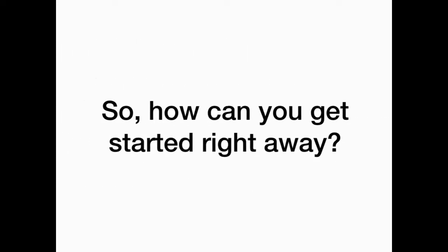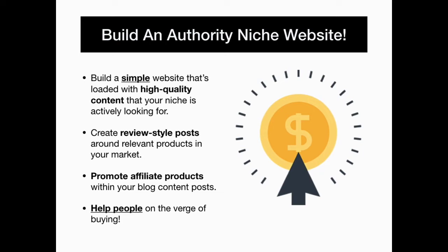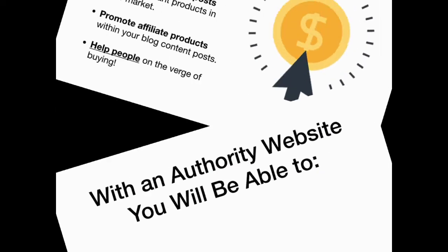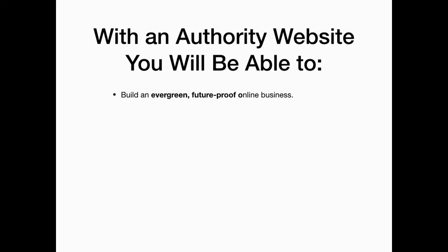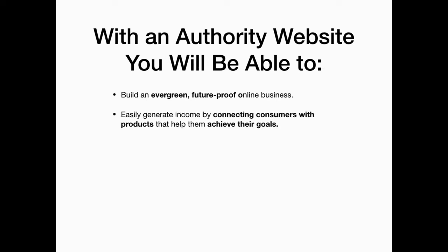So how can you get started right away? By building an authority niche website. Build a simple website that's loaded with high quality content that your niche is actively looking for. Then create review style posts around relevant products in your market and promote affiliate products within your blog content posts. Help people on the verge of buying. With an authority website you'll be able to build an evergreen, future-proof online business, and easily generate income by connecting consumers with products that help them achieve their goals.